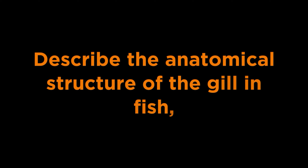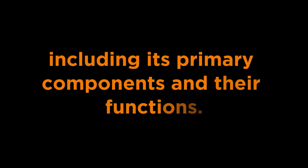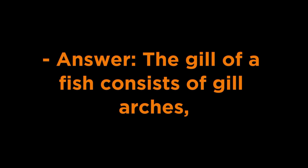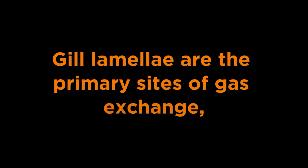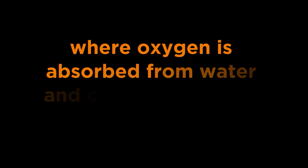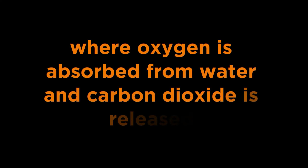Question 1 - Structure of the gill: Describe the anatomical structure of the gill in fish, including its primary components and their functions. Answer: The gill of a fish consists of gill arches, gill filaments, and gill lamellae. Gill arches provide support for the gill filaments, which are thin, finger-like projections. Gill lamellae are the primary sites of gas exchange, where oxygen is absorbed from water and carbon dioxide is released.